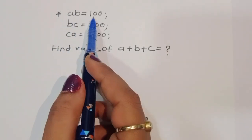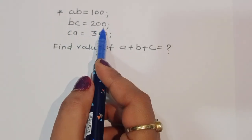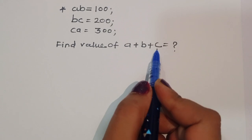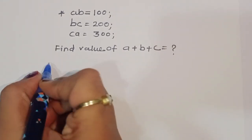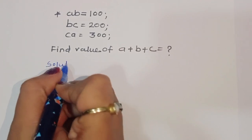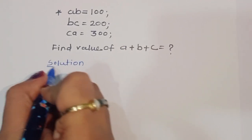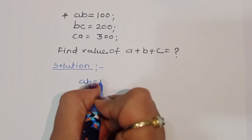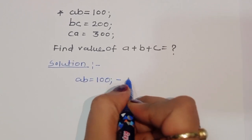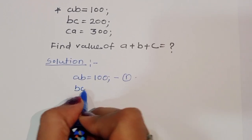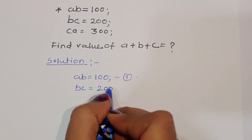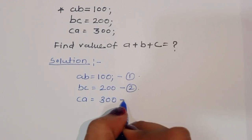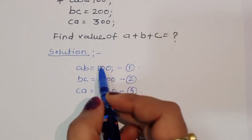The question is: given AB equals 100, BC equals 200, CA equals 300, we have to find out the value of a plus b plus c. In the solution, AB equals 100 is equation number 1, BC equals 200 is equation number 2, and CA equals 300 is equation number 3. Now we have three equations.